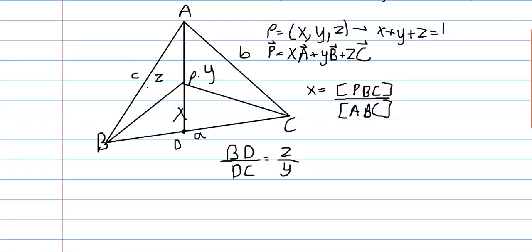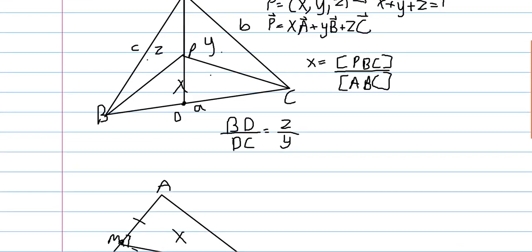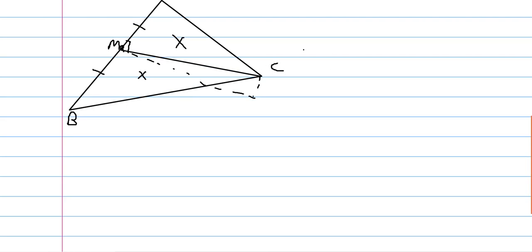Let's look at an example. Say we want to find the coordinates of the midpoint M of AB. If we draw in the midpoint, these two side lengths are equal. If we draw in an altitude, both triangle AMC and triangle BMC have the same altitude. Since they have equal bases, their areas are equal. From our convention, the area PBC corresponds to the first coordinate, so MBC would be the first coordinate of M. So M would be (x, x, ...).